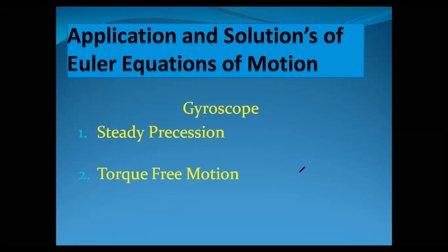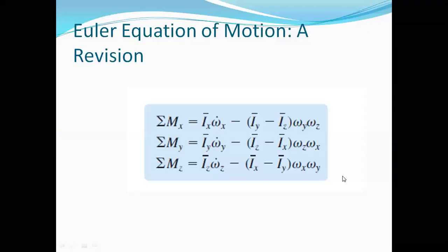To cut a long story short, the applications and solutions of Euler equations of motion is simply understanding the motion of the gyroscope. If we understand the motion of the gyroscope, that will be the application of the Euler equation of motion, as well as the solutions in the form of steady precession and torque-free motion of the gyroscope.